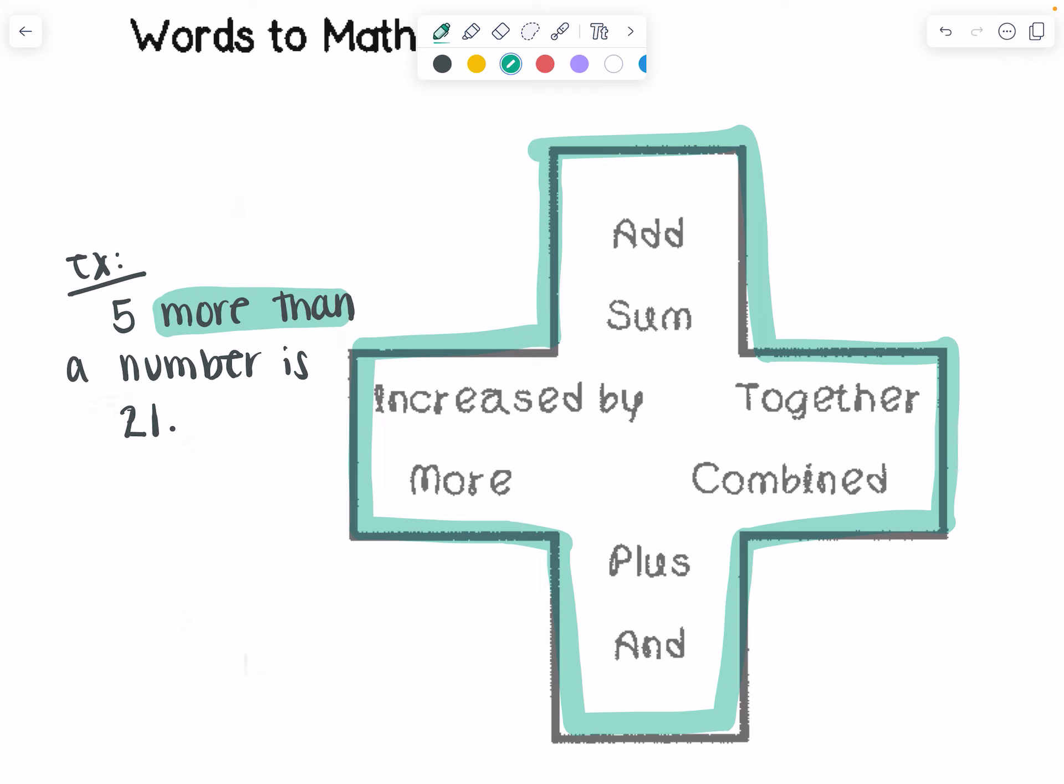So more than is going to be addition, a number we're just going to let be any variable typically n or x, and so I will have 5 more than plus a number x is 21 equals 21. Now we'll learn what to do with that later in this video. We're just looking at getting it set up. So 5 more than a number is 21, 5 plus x is 21 or equals 21.